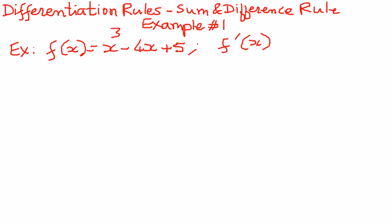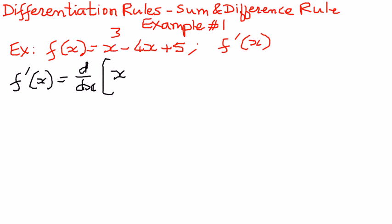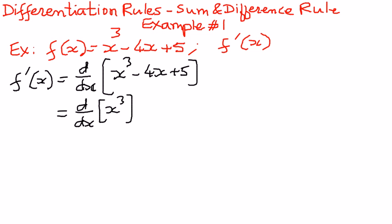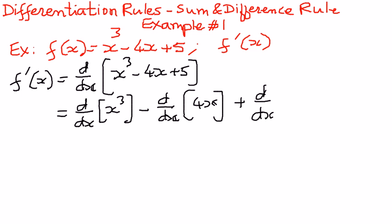So the way to solve this type of problem is as follows. f prime of x is going to be equal to d by dx of this whole function: x to the power of 3 minus 4x plus 5. And we can apply the derivative to each one of them as follows: d by dx of x to the power of 3, minus d by dx of 4x, and then plus d by dx of 5.